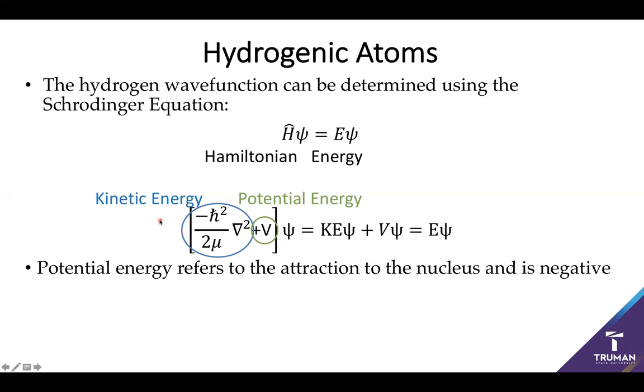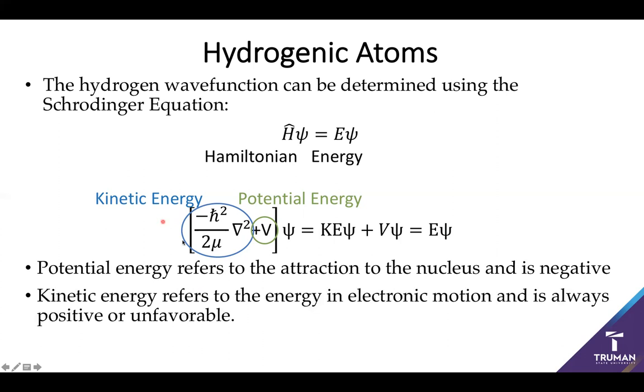The kinetic energy, however, involves movement and movement takes work. So this is always going to be positive or unfavorable. The electrons want to have a lot of negative potential energy and very little movement to accomplish it. These two things become very balanced.